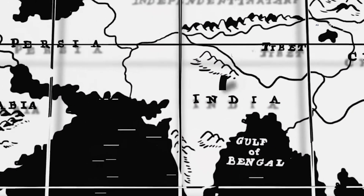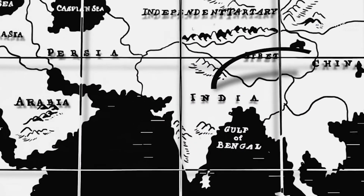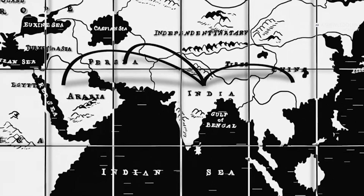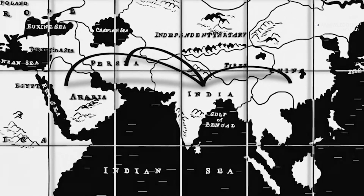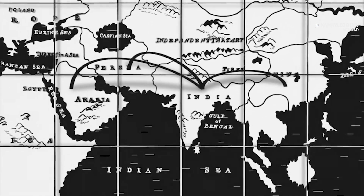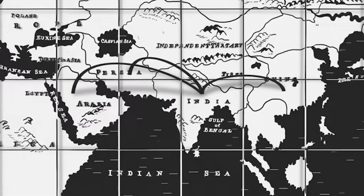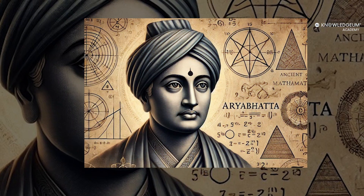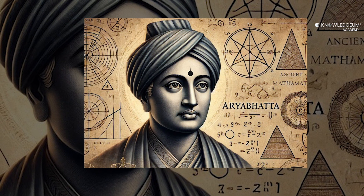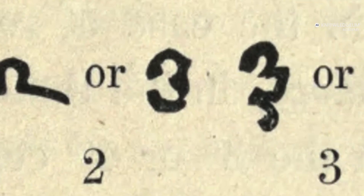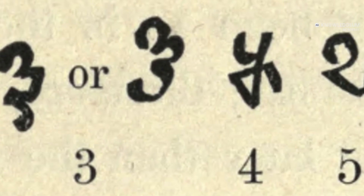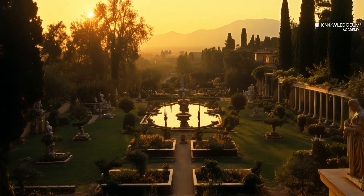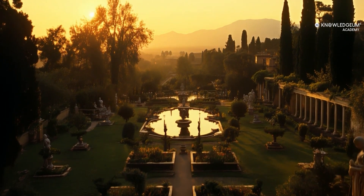The Indian concept of zero travelled through the Arab world to Europe, revolutionising mathematics, engineering and even computers today. So, while Aryabhata was a mathematical genius, the true credit for zero as we know it goes to ancient Indian scholars over centuries.